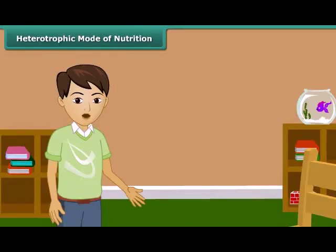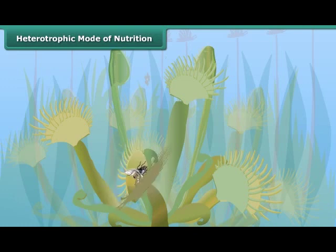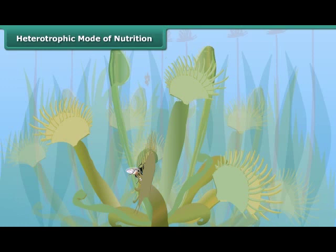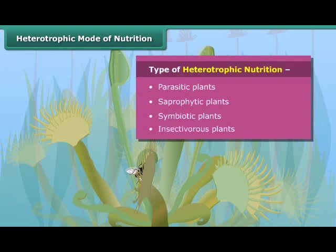Friends, now let us know about those plants which do not have chlorophyll and cannot synthesize their food on their own. Just think about how do they survive and from where do they derive nutrients. These plants derive food from other plants and animals, and this type of mode of nutrition is called heterotrophic mode of nutrition. There are four types of heterotrophic plants: parasitic plants, saprophytic plants, symbiotic plants, and insectivorous plants.